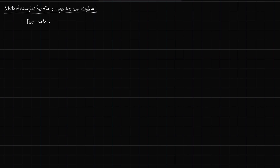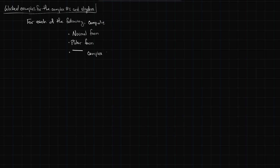For each of the following, we're going to compute quite a few things: the normal form, the polar form, the complex conjugate, the magnitude, the real part, the imaginary part, and plot on the complex plane.